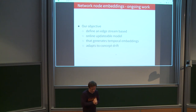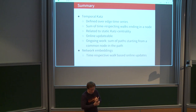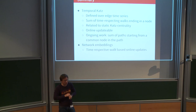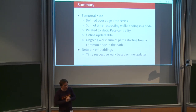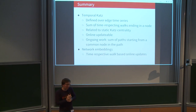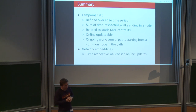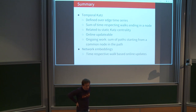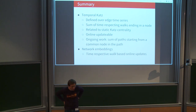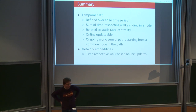To conclude: temporal Katz centrality is defined over edge time series as the sum of time-respecting walks ending in a specific node. It is related to static Katz centrality when the edge stream is a uniform sample from a static graph. We provided online updatable formulas for arbitrary edge streams. Two ongoing works extend this: generalizing to walks starting from a node, and developing temporally evolving network embeddings based on time-respecting walks.